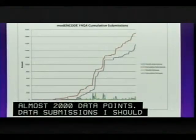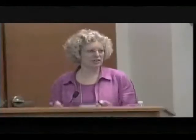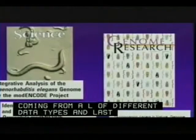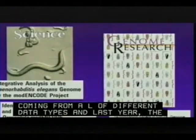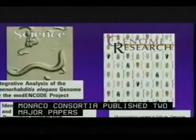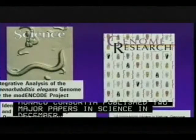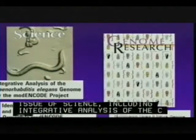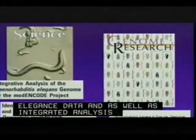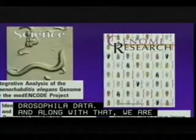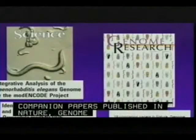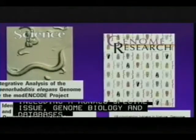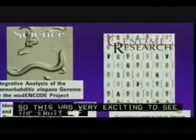There's a lot of work that has taken place to actually analyze the data, which is coming from many different data types. Last year the modENCODE consortia published two major papers in Science — in the December 10th and December 24th issues — including integrative analysis of the C. elegans data as well as integrated analysis of the Drosophila data. Along with that were 19 companion papers from individual groups published in Nature, Genome Research, including a modENCODE special issue, as well as Genome Biology and Database.